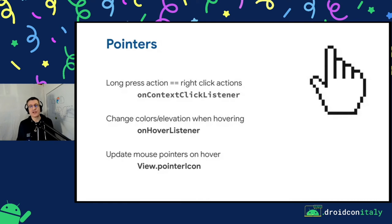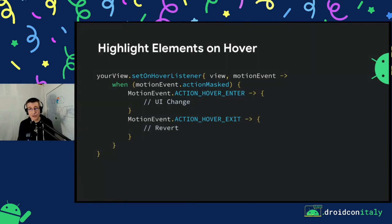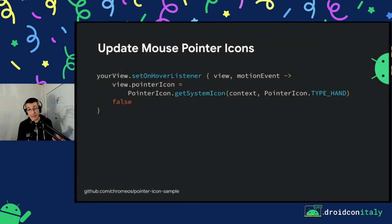Another thing is the context of interaction. Working with a touch interface versus keyboard and mouse is different. Even just understanding what is an actionable item on the UI can be more difficult when working with a pointer. What you can do, for example, is highlight elements on hover. Using the set-on-hover listener, you can detect when entering or exiting an element and make a UI change between those two events. You can also change the pointer icon. There is a sample on GitHub under the Chrome OS user organization showing how to make your UI very easy to use when the user is working with a trackpad or mouse.